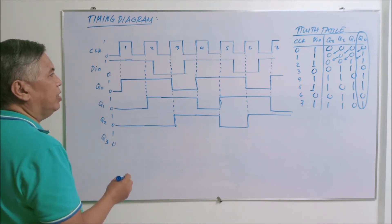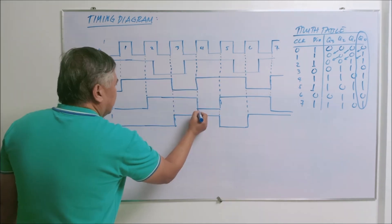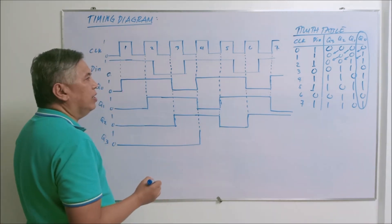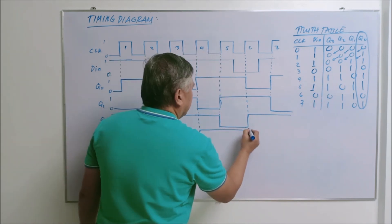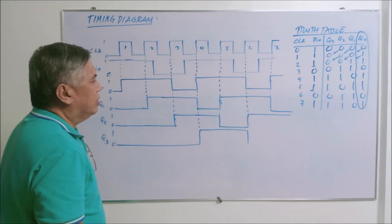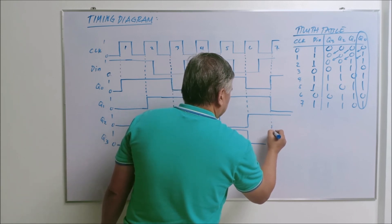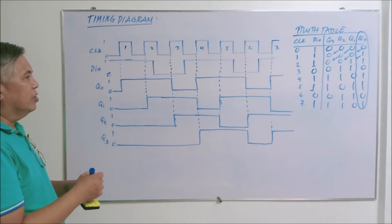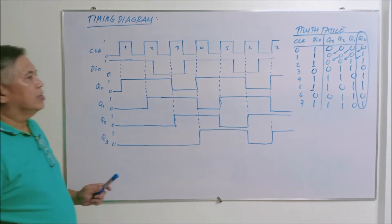For Q sub three, the output becomes one only during the fourth positive triggering of the clock. So it starts with zero, becomes one on the fourth positive triggering, then becomes zero again on the sixth positive triggering, and then becomes one again on the seventh positive triggering of the clock. That would be our Q sub three — and that is your complete timing diagram for a four-bit shift left register.